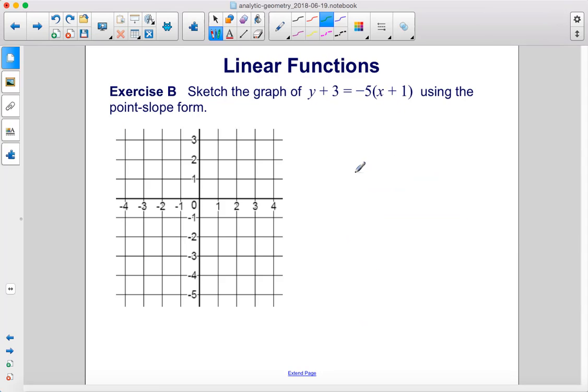Exercise B. Sketch the graph of y plus 3 equals negative 5 times x plus 1 using the point slope form. Alright, so what's our point and what's our slope here?